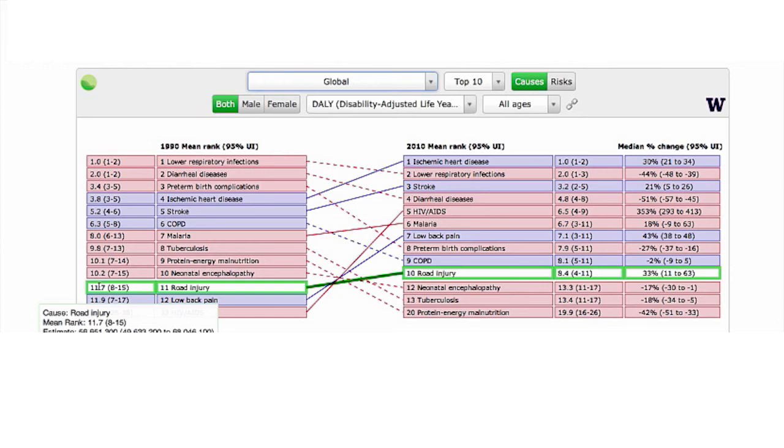COPD has overshot lower respiratory infections to become number three. Lung cancer has increased from number eight to number five. And across the board a pretty consistent change has been the increase in rankings for NCDs. At the same time we've seen a decrease in the ranking of most infectious diseases: malaria, tuberculosis, diarrheal diseases and lower respiratory infections to name a few in the top 10. The standout example running contrary to this is HIV which we've seen an enormous increase of in the last 20 years.